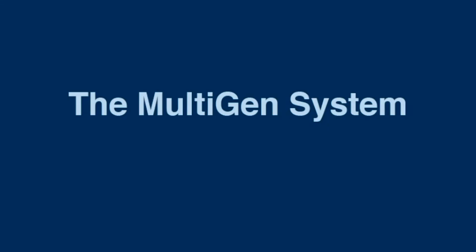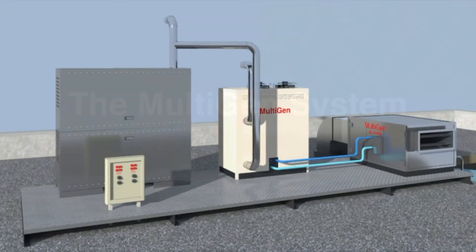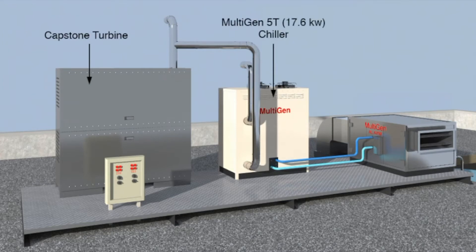MultiGen is a tri-generation system using a capstan turbine generator, an absorption chiller, and an air conditioner air water maker.